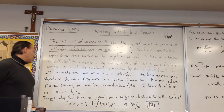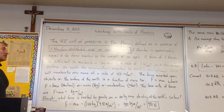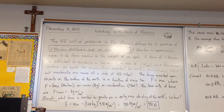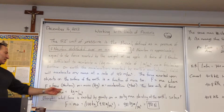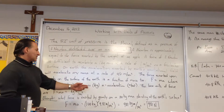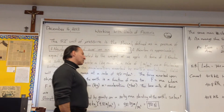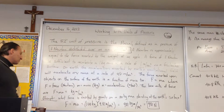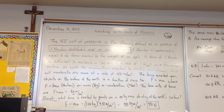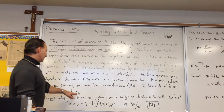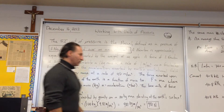The force exerted upon objects on the surface of the Earth is a function of mass too — more massive objects exert more force. F is equal to MA: force is equal to mass times acceleration, where force has units of newtons, mass is measured in kilograms, and acceleration is in meters per second squared. The base units of force are therefore kilogram meters per second squared, and that is what we call the newton.